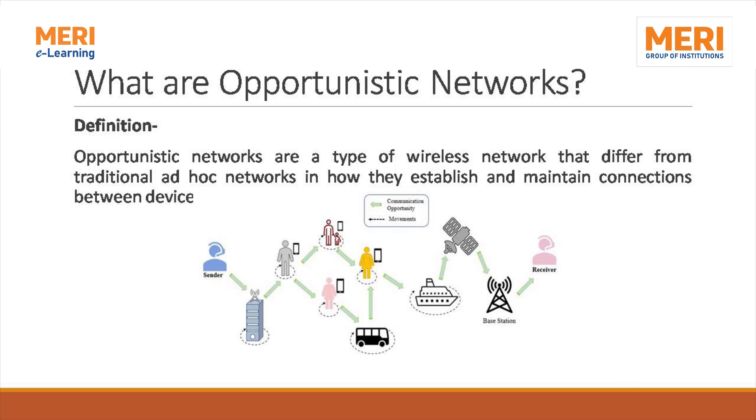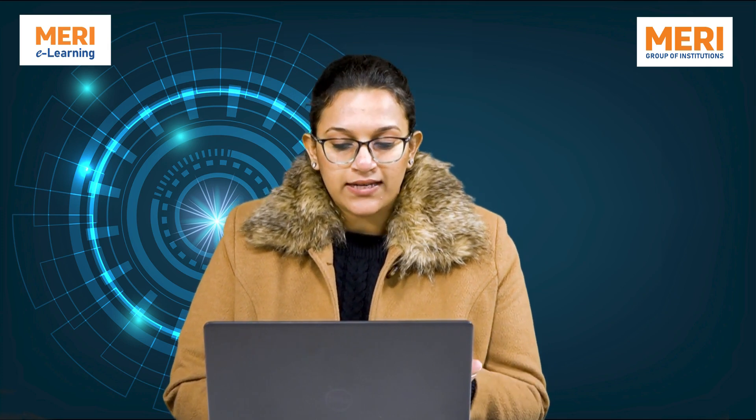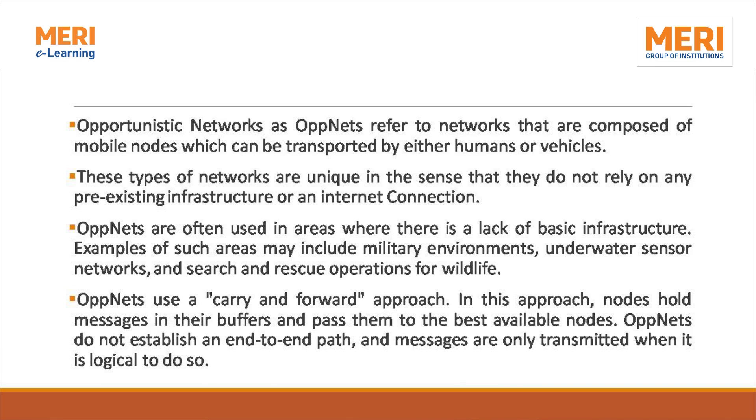What are opportunistic networks and how are they different? Opportunistic networks are a type of wireless network that differ from traditional ad hoc networks in how they establish and maintain connections between devices. Here is a figure explaining the architecture of OpNets. There is a sender, a receiver, and multiple nodes in between. The message can be forwarded between sender and receiver through any of the routes nodes took opportunity of. These networks are composed of mobile nodes which can be transported by either humans or vehicles, and they do not rely on pre-existing infrastructure or internet connection as ad hoc networks do.